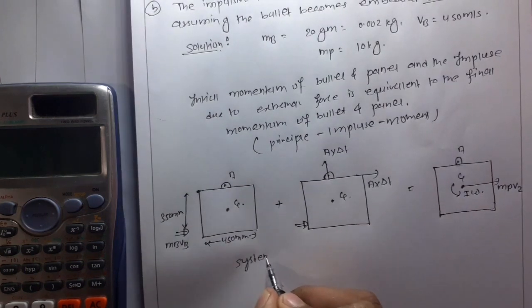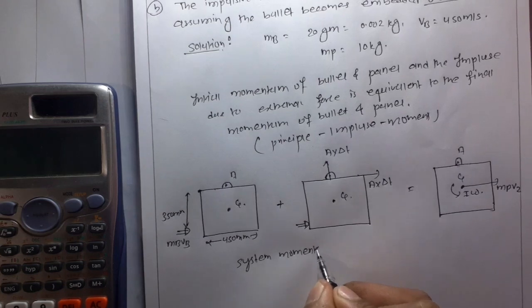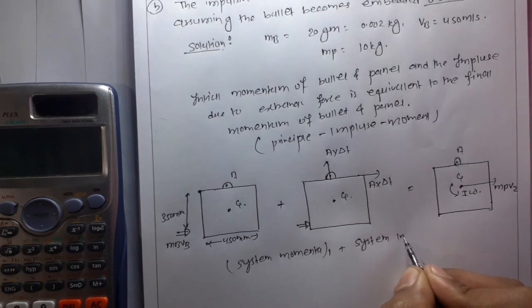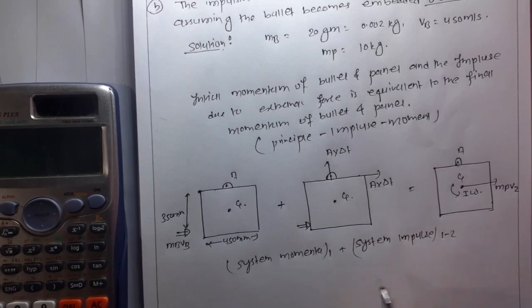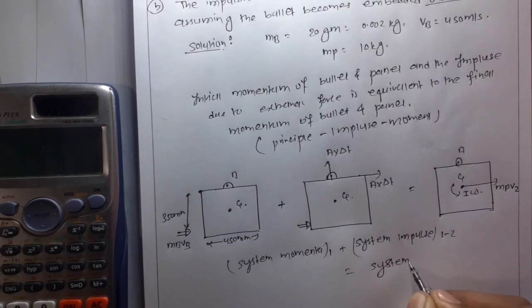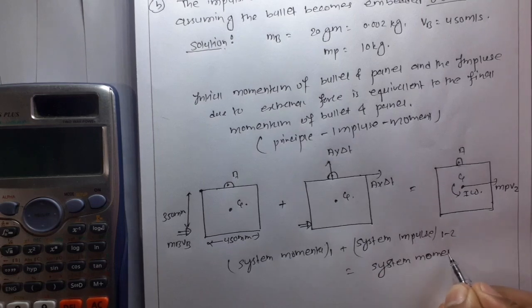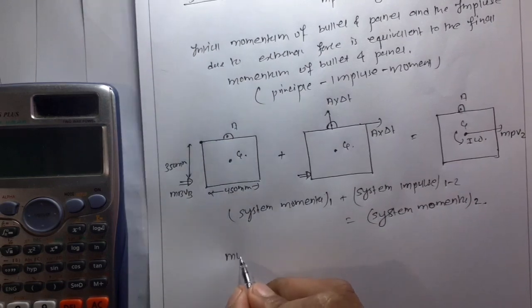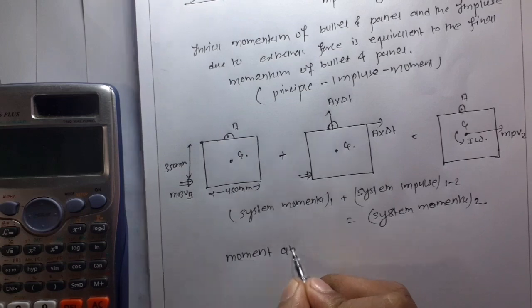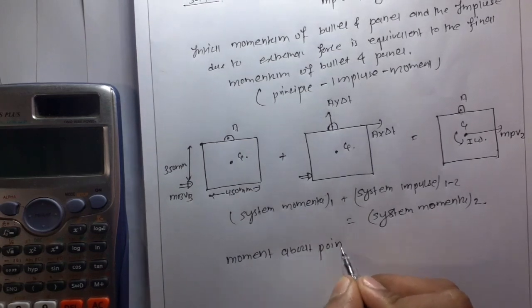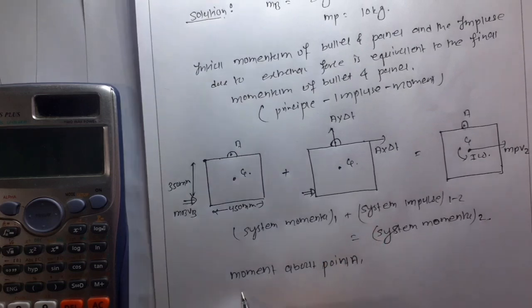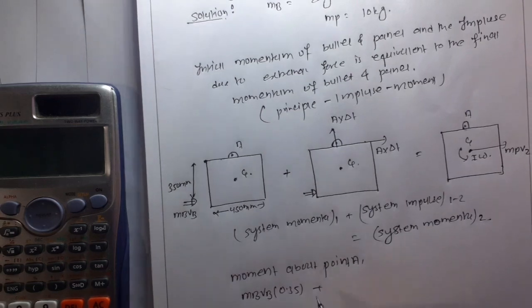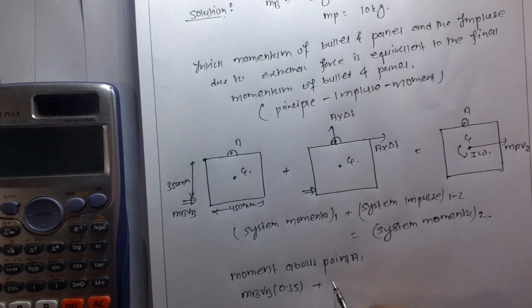System moment 1 plus system impulse 1 to 2 is equal to system moment 2.